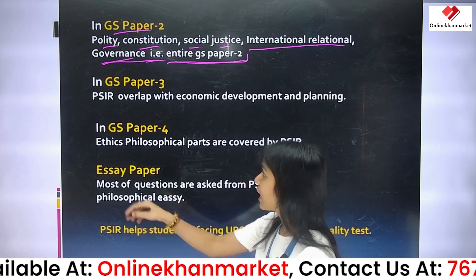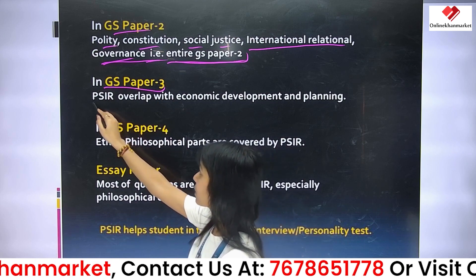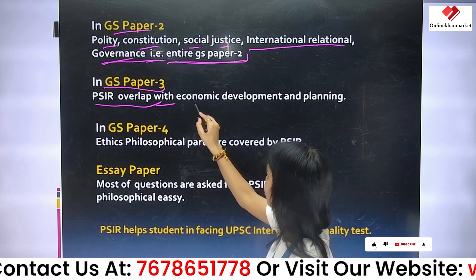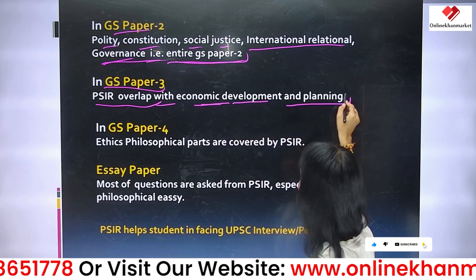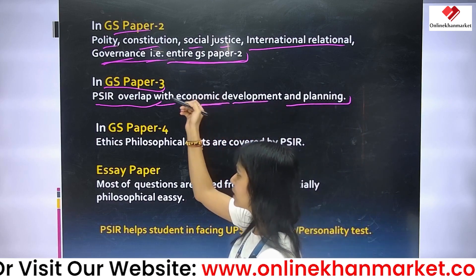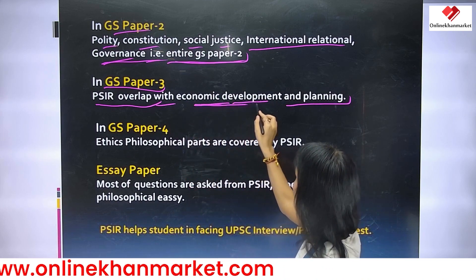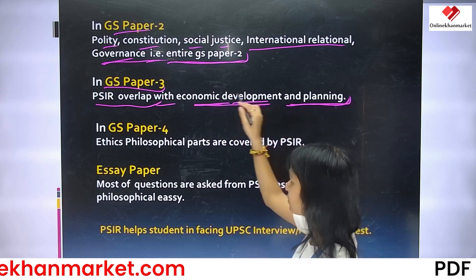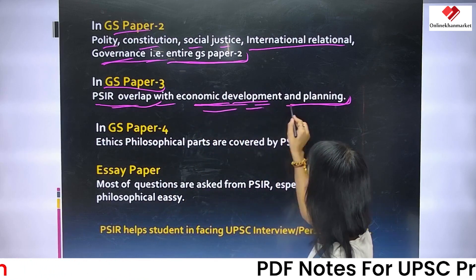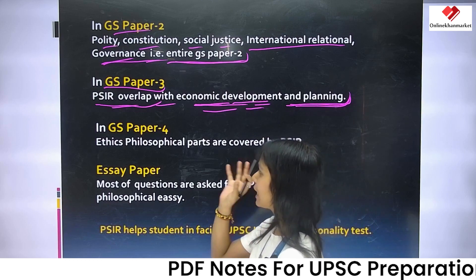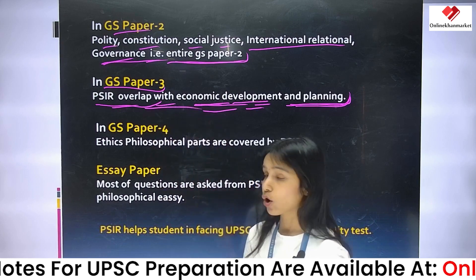In GS Paper 3, there is overlap with economic development and planning. GS Paper 3 covers economic development and planning, and PSIR also covers economic development and planning, so that's another reason why you should choose PSIR as an option.